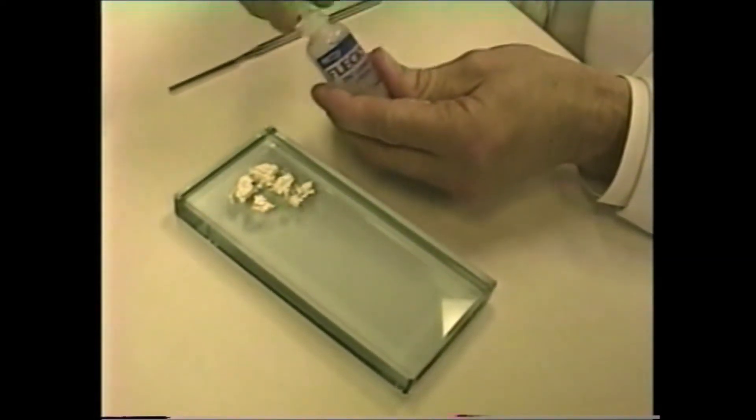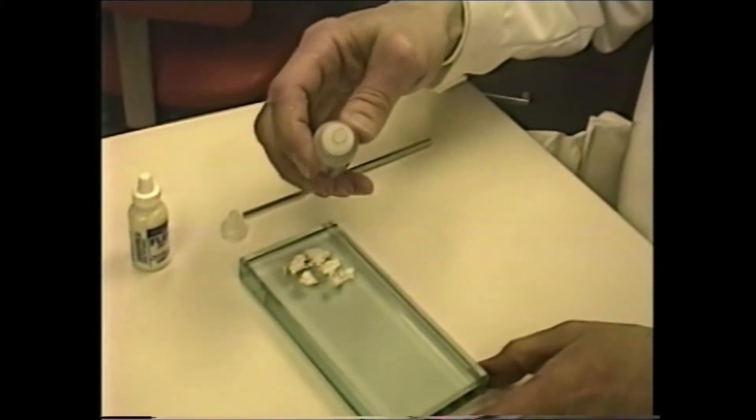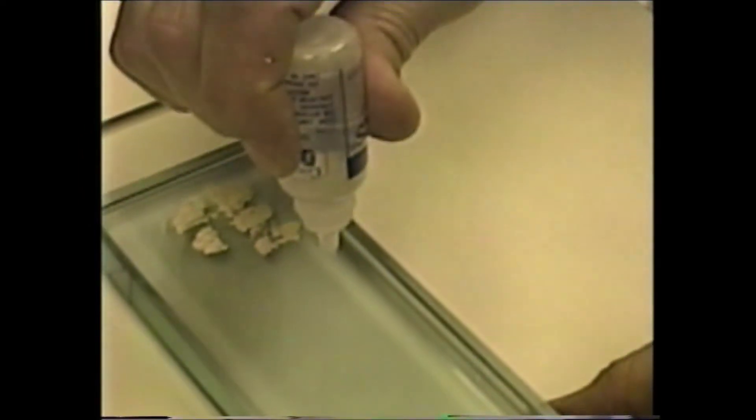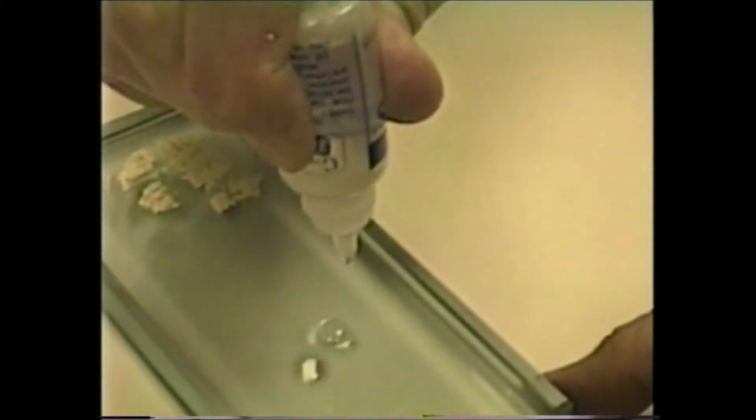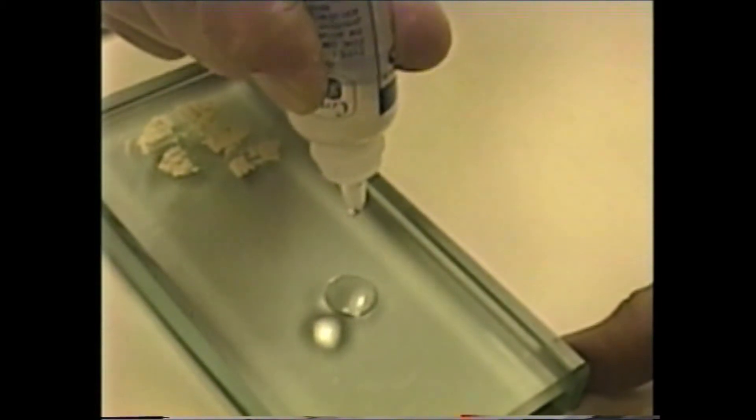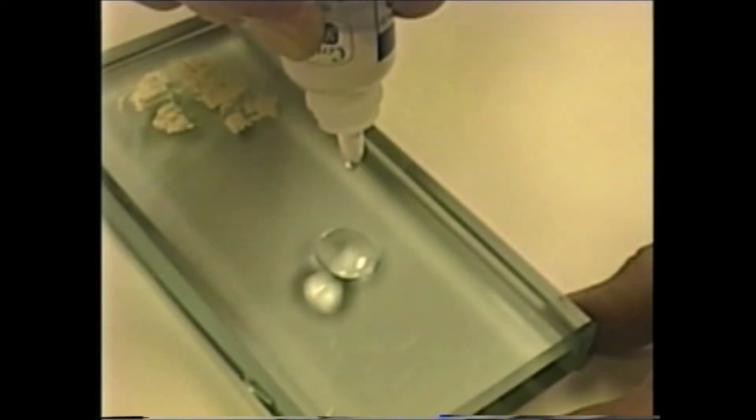Next, I'll dispense the liquid. In dispensing the liquid, you hold the bottle vertically and gently squeeze. You'll see the droplets forming. And you count: one, two, three, four, five, six, seven, eight, nine, ten, eleven, twelve.